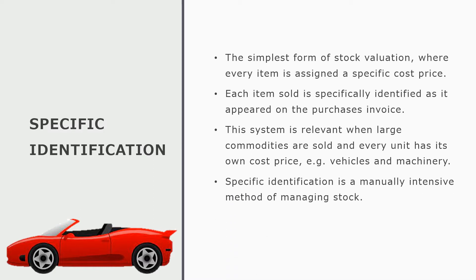Specific identification is manually intensive, because we physically have to go through every single item identified separately. We can't just count 10 cars. We have to count how many of this model, how many of this model, how many of this model, and then we have to go and look for the invoices to see what the purchase price is per unit.